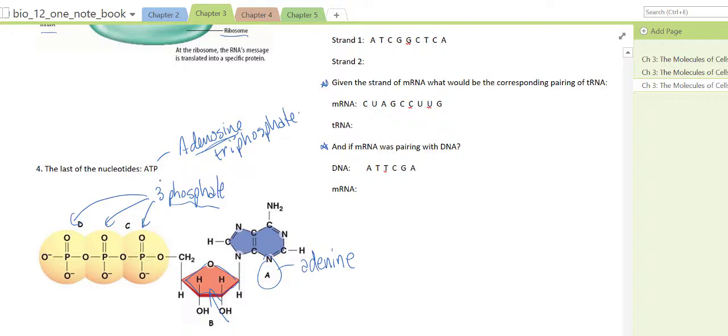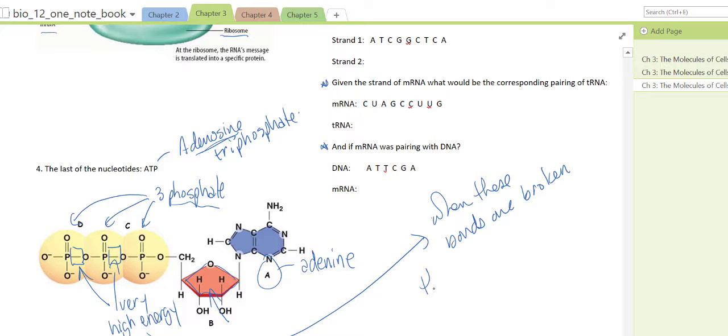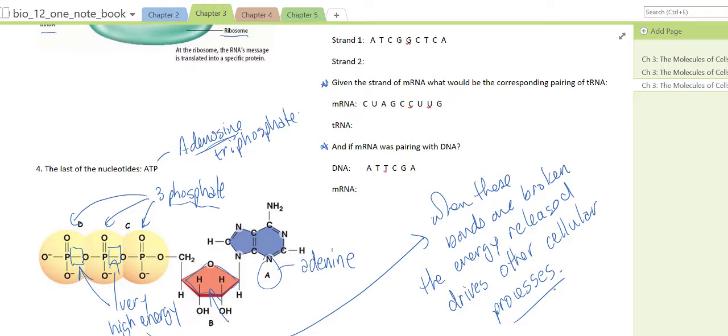Why this molecule essentially functions as the energy currency of the cell is because of these bonds here joining the phosphates together. These are very high energy chemical bonds. When these bonds are broken, the energy released drives other cellular processes, various cellular processes that are the chemical reactions throughout our cells and throughout our body.